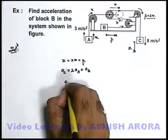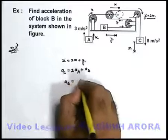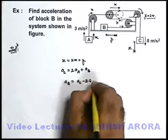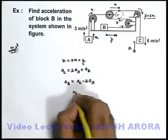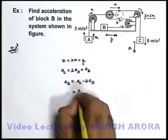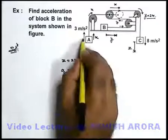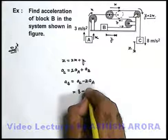Now the acceleration of block B can be written as acceleration of block C minus twice the acceleration of block A. We just substitute the values: acceleration of C is 8 meters per second squared minus acceleration of A is 3, so 2 times 3 is 6.